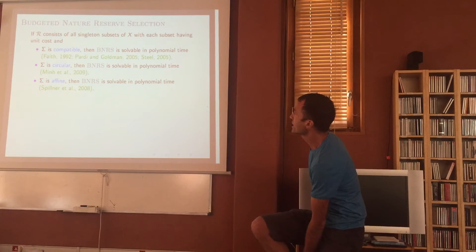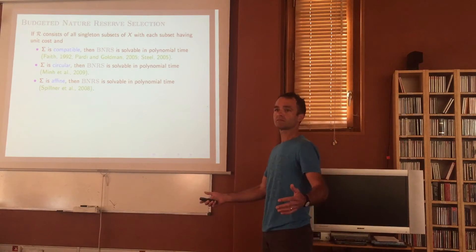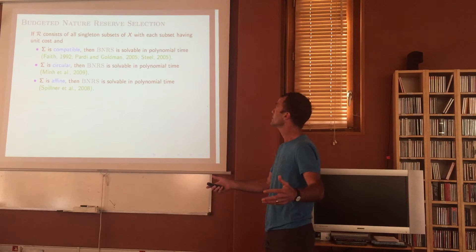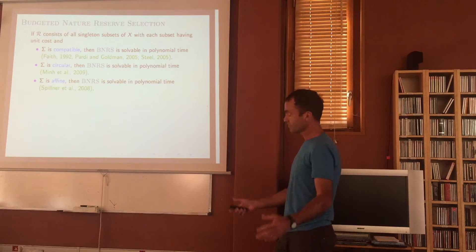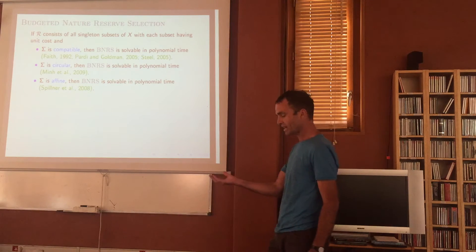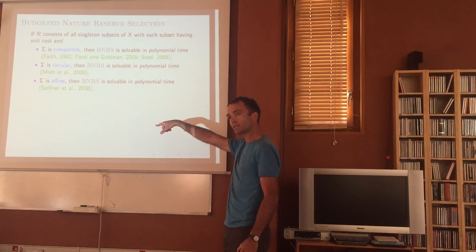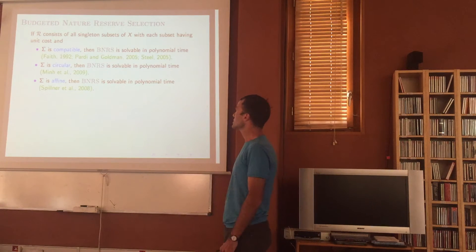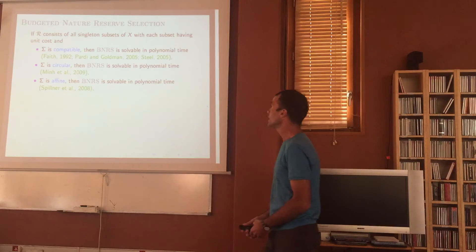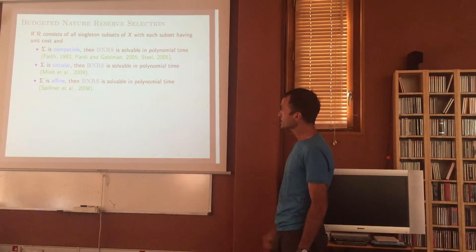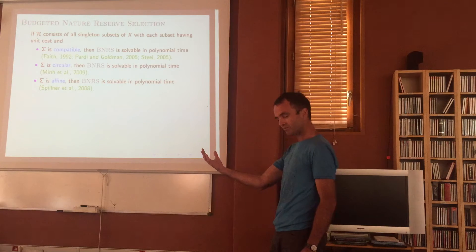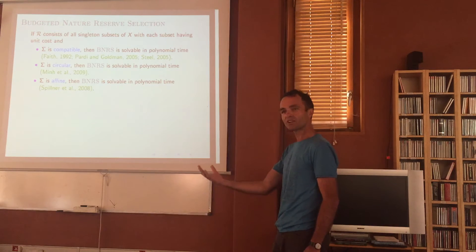What do we know about the problem? If R consists of all singletons with unit cost, and the split system is compatible (all splits arise from a tree), that's the original problem — and it's solvable in polynomial time using the greedy algorithm just described. Dan Faith knew about the algorithm but never proved it worked; independently, Pardi and Goldman and Mike Steele showed it worked in 2005.